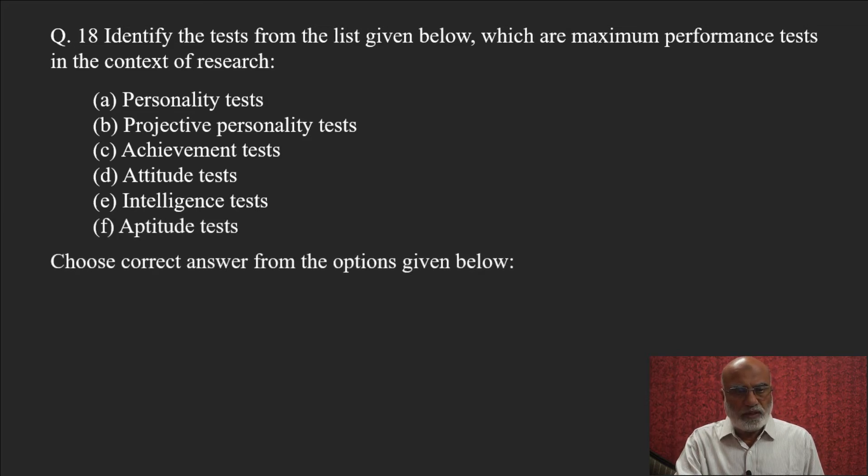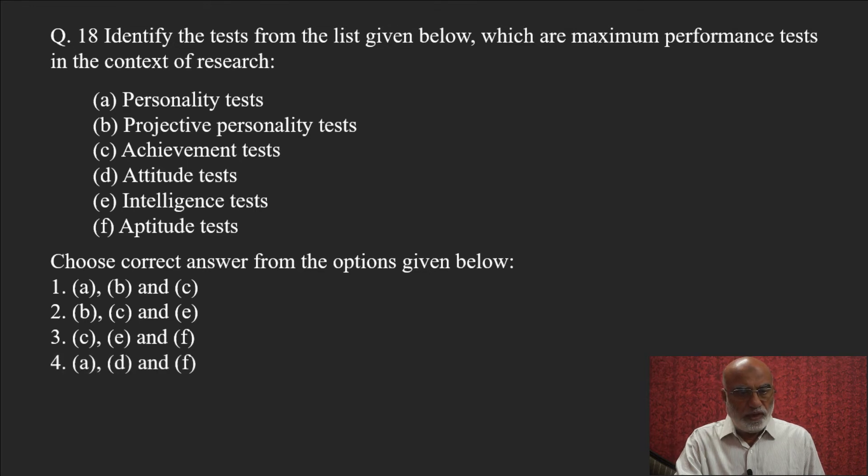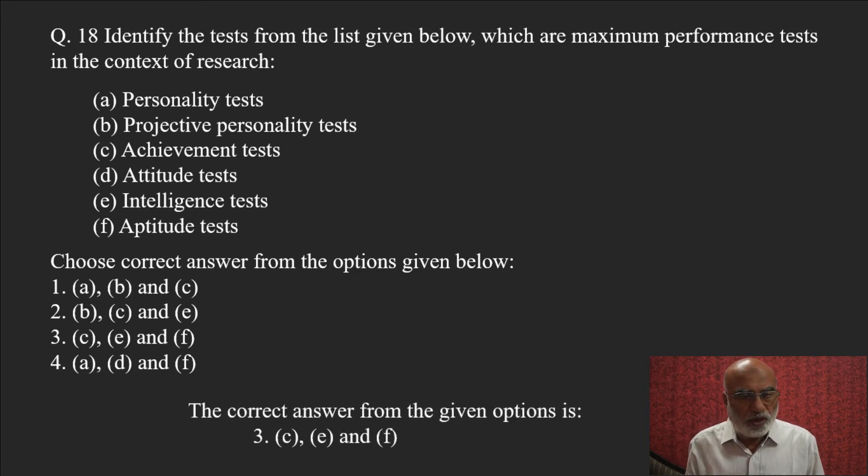The correct answer we have to select is a combination. First option: A, B and C personality test, projective personality test, achievement test. Second: B, C and E intelligence test included. Third: C, E and F aptitude test included. Fourth: A, D and F personality test, attitude test and aptitude test. And the correct answer goes to third.